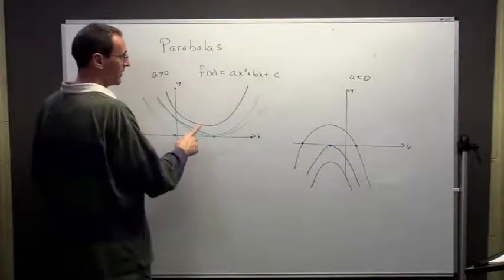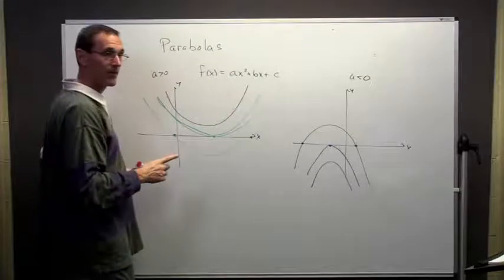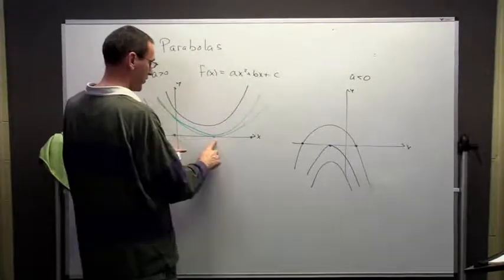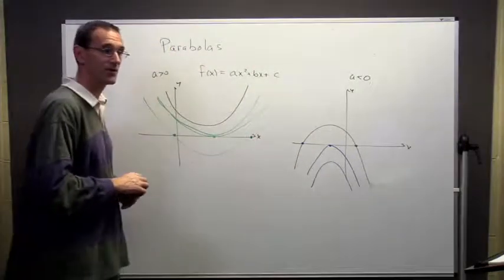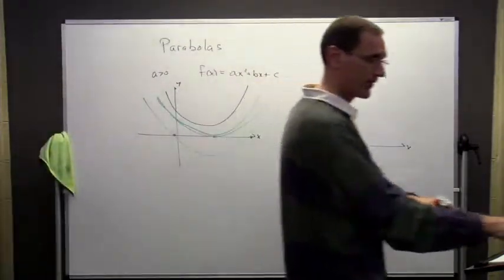In this case, if a is not zero, I could have either two roots, one root, or no root. And that's going to be true either way, if a is positive or negative.